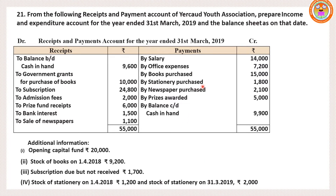While entering stationery purchased under the debit side (expenditure side), we have to use that formula. Newspaper purchase is a revenue transaction so it appears under debit side expenditure side. Price fund received 6,000 and prices awarded — these two items will be shown while preparing balance sheet liability side. Closing balance won't appear in income and expenditure account. Opening capital fund will be shown on balance sheet liability side.